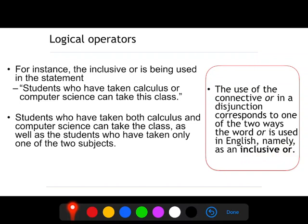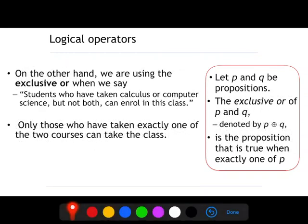This operator — the inclusive OR — means that all students who have taken calculus, or computer science, or both of them, can take the class. There is also an exclusive OR, where only those who have taken exactly one of the two courses can take the class. In plain English we write it like this: 'Students who have taken calculus or computer science, but not both, can enroll in this class.' When we have this type of sentence, we use the exclusive OR and this is how we denote that compound proposition.